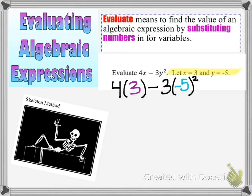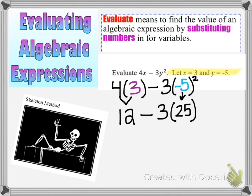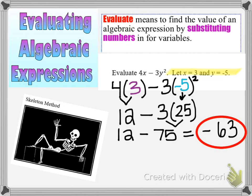Now it's just numbers, so all I have to do is follow my order of operations. I'm going to multiply 4 times 3, which gives me 12. Then I have minus, and now I have 3 times negative 5 squared. Order of operations tells me I leave the 3 alone and square the negative 5 first, which gives me 25. Next, I multiply 3 times 25. So I have 12 minus 75, which gives me a final value of negative 63.